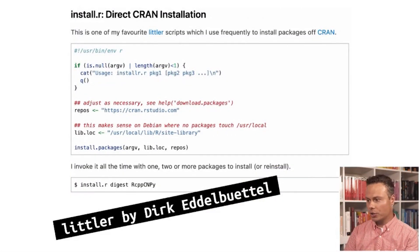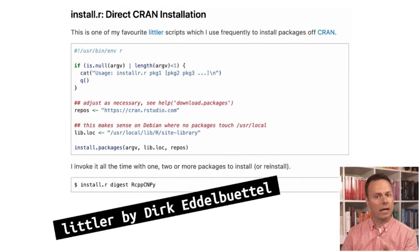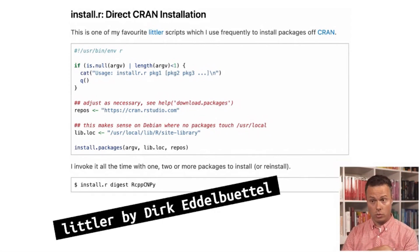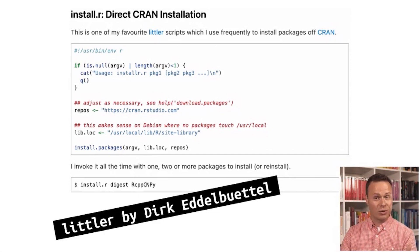I also want to give special mention to an R package on CRAN called little r by Derek Adelbüttel. This actually predates the Rscript executable. He has a bunch of command line tools that he often uses, which are included with this package. In this particular case, it's a small script that allows you to install R packages directly from the command line, so you don't need to start R yourself first. Many of these tools are small, but when you have many tools, they add up and they'll make you more efficient.